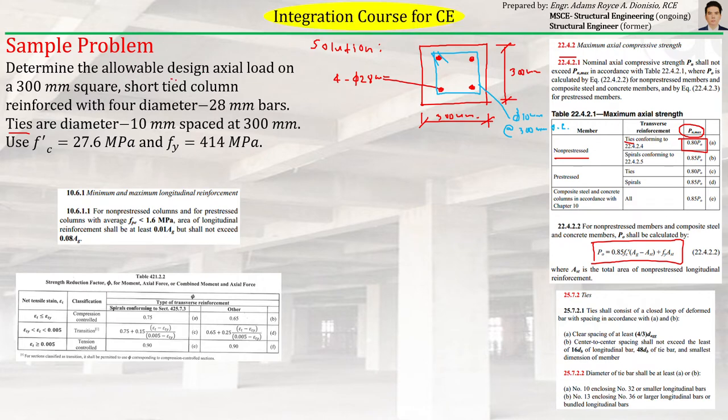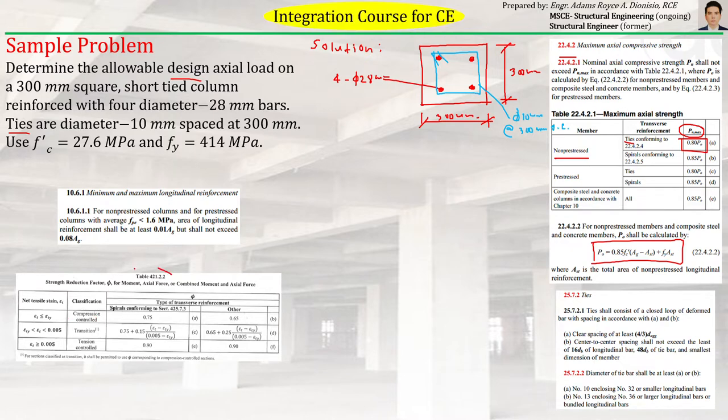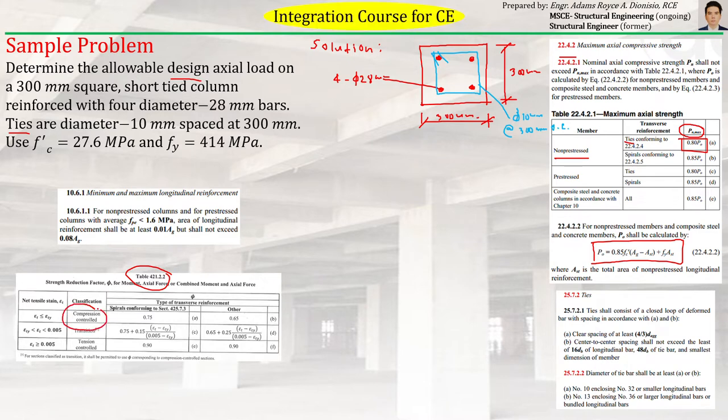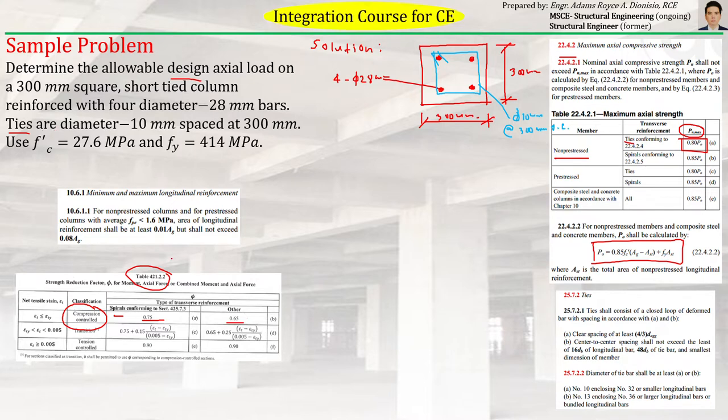Although what's being asked is design actual load. So when we see the word design in the question, it's a clue that we need the reduced value. For the case of columns, since the main purpose of the column is to resist compression, if we refer to table 421.2.2, we know that since the column's main purpose is to resist compression, therefore, we can classify it as compression control. So if the reinforcement is spiral, the phi will be 0.75. Otherwise, if ties, it will just be 0.65. And since we are dealing with ties, obviously, our phi will be 0.65.